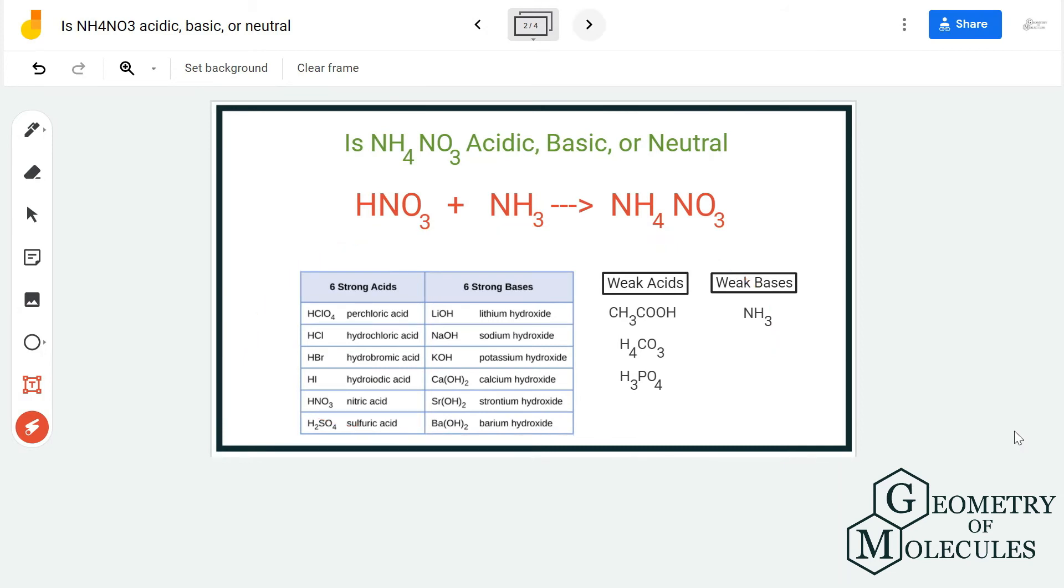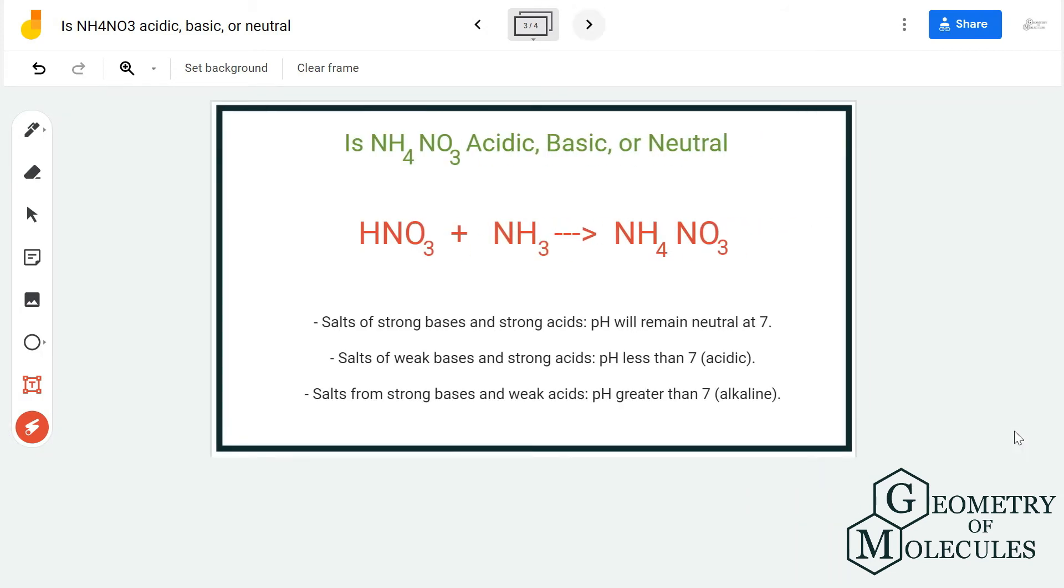Mostly salts of strong bases and strong acids will be neutral which will be at 7. The salts of weak bases and strong acids will be less than 7 which means it is acidic. And the salts from strong bases and weak acids will be higher than 7 which means it is basic or alkaline.